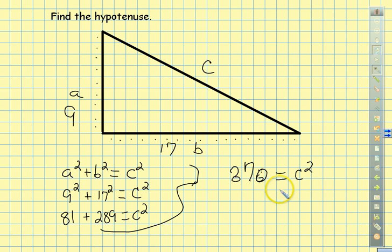And you're going to add 81 and 289 to get 370. Now, from what we learned yesterday, to do the opposite of squaring, you have to take the square root. So we're going to take the square root of both sides. So then the square root of C squared would be just the letter C.